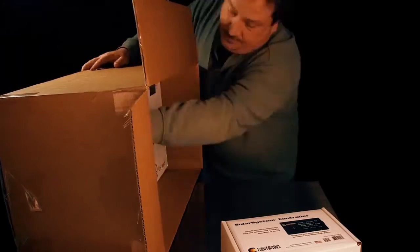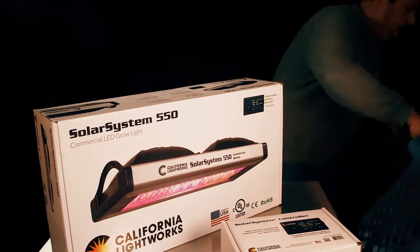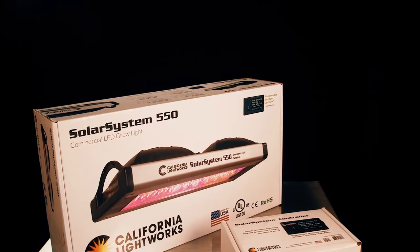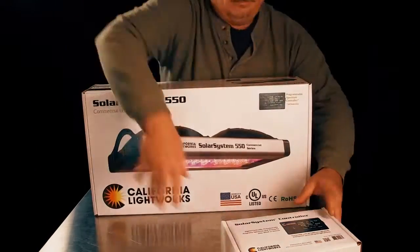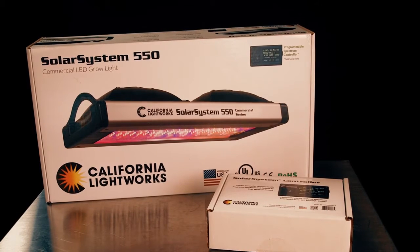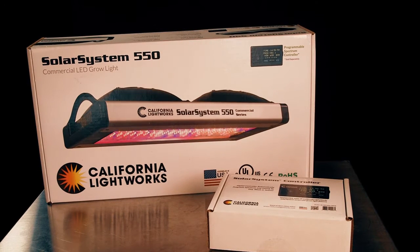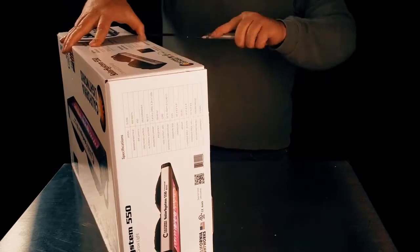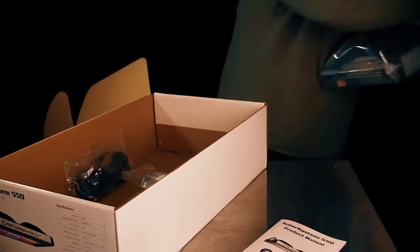All right, the first thing we're going to do is unbox it. It's a pretty big box that it came in because we're going to be taking a look at the whole system, which consists of the Solar System light that you see in the bigger box there. And then in the smaller box is the controller, and they're available separately. The controller can be used for several different lights in the Solar System family. We're going to be taking a look at both.